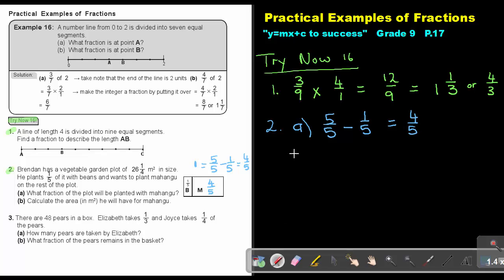If I look at number B, calculate the area you have for Mohangu. So basically, I'm just working out the fraction now. So it's that 4 over 5, and I multiply it with the total area. And that's 26 and a quarter. Now, this is a multiplication sum. So I make it an improper fraction.